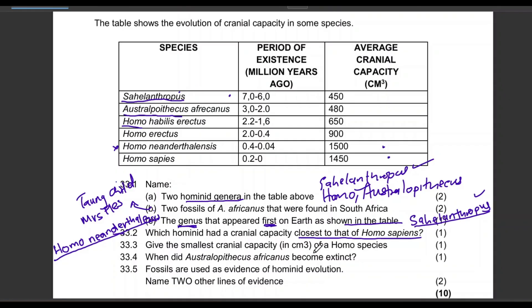Give the smallest cranial capacity of a Homo species. We look at the four Homo species in the table. We can't take 450 or 480 because they are not Homo species — the smallest cranial capacity for a Homo species is 650 cm³.